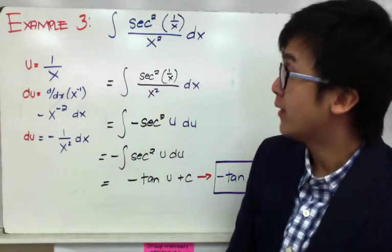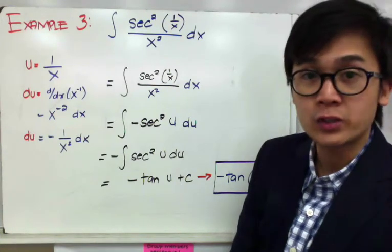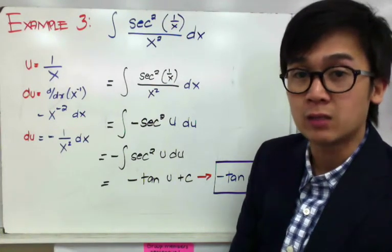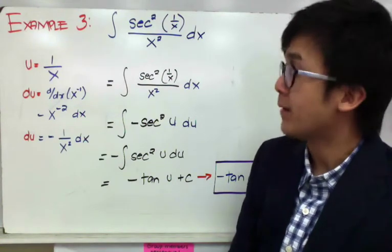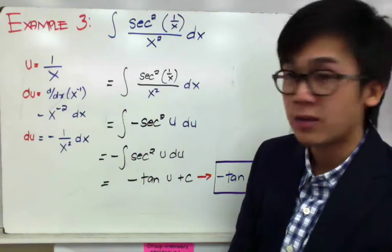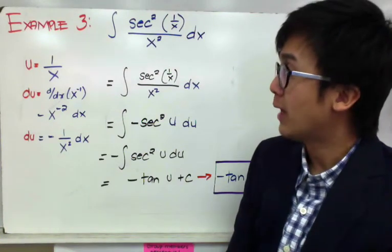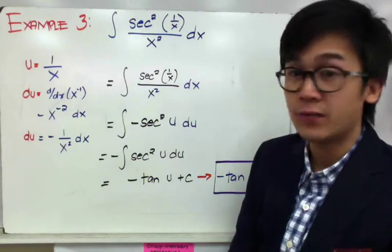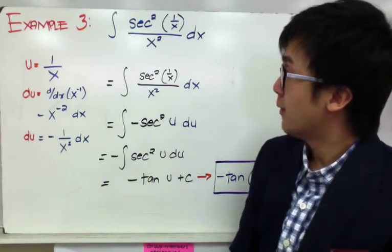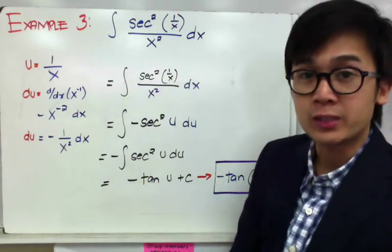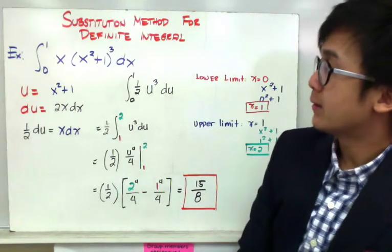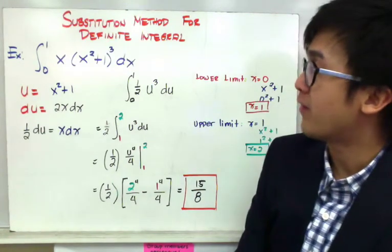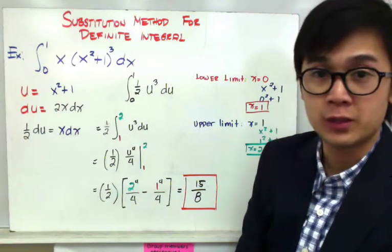Now, what if instead of finding the indefinite integral we need to find the definite integral — an integral with a lower limit and an upper limit? To use the substitution method for those cases, we look at the example: the integral of x times the cube root of x squared plus 1 dx from 0 to 1.